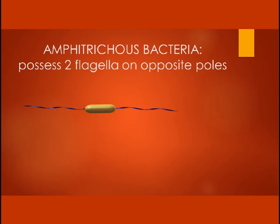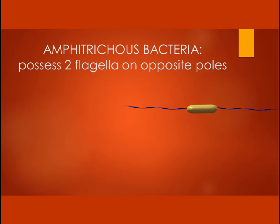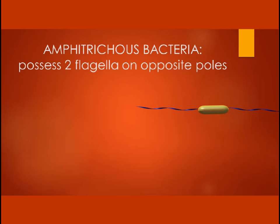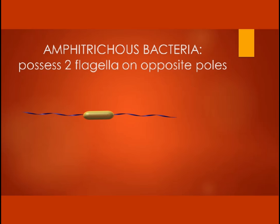In contrast, amphitrichous bacteria possess two flagella, one at opposite ends of the cell. One will operate at a time, and each allows movement in opposite directions.